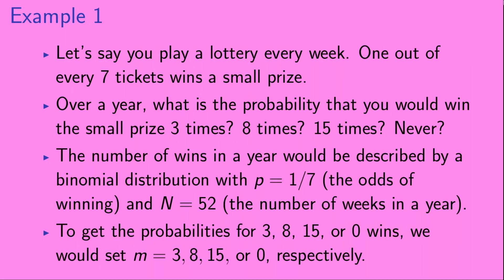Example 1. Let's say you play the lottery every week. 1 out of every 7 tickets wins a small prize. Over a year, what is the probability that you would win the small prize 3 times? 8 times? 15 times? Never? The number of wins in a year would be described by a binomial distribution with p equal 1 seventh, the odds of winning, and n equals 52, the number of weeks in a year. To get the probabilities for 3, 8, 15 or 0 wins, we would set m equal to 3, 8, 15 or 0, respectively.